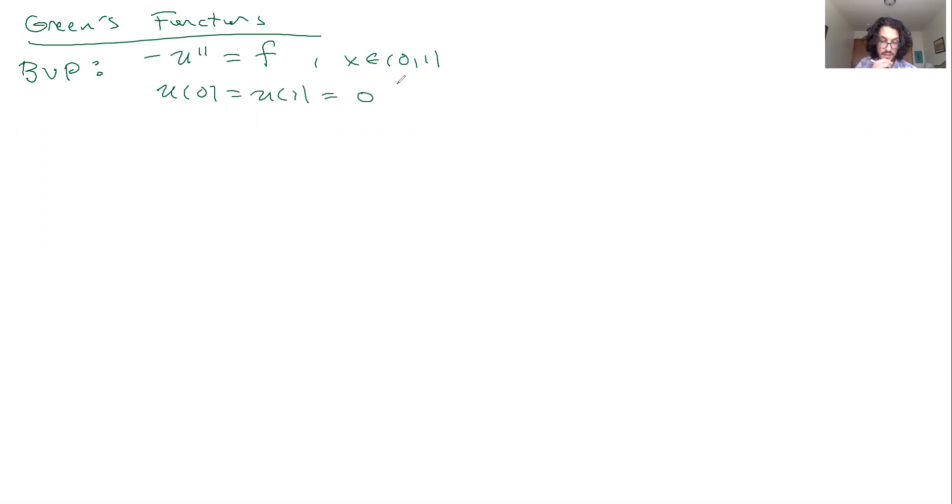So this could come about as a steady state of a forced heat equation, for example, and we found that after a bit of work that u(x) can be expressed like the integral of the inhomogeneity against a Green's function.